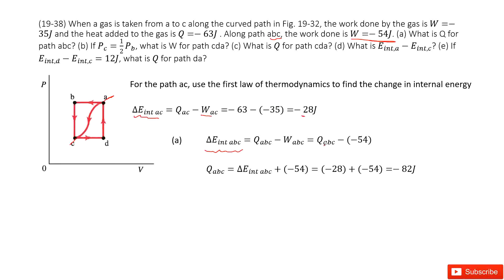In this equation, this part is the given number, and this part you can find from there. So you can find Q_ABC. The Q_ABC equals delta E_internal for A-B-C. Then move this part to the left-hand side and input the internal energy change A-B-C as negative 28. You get the answer. Not so difficult.